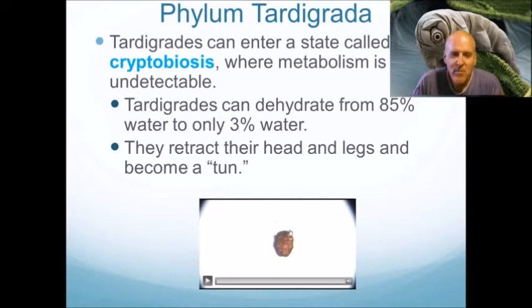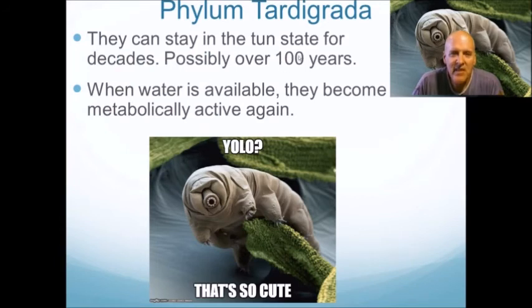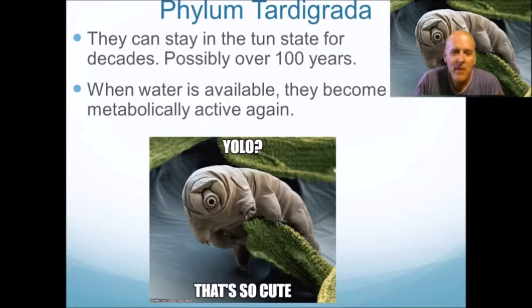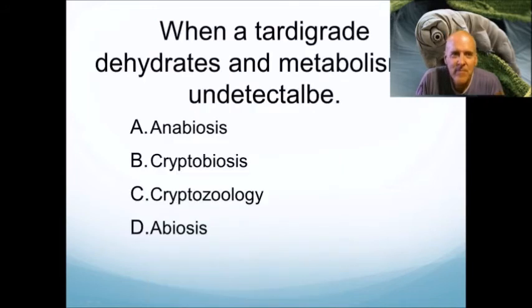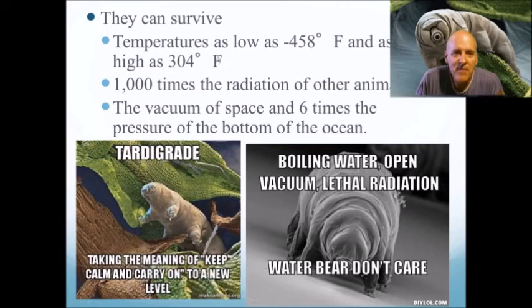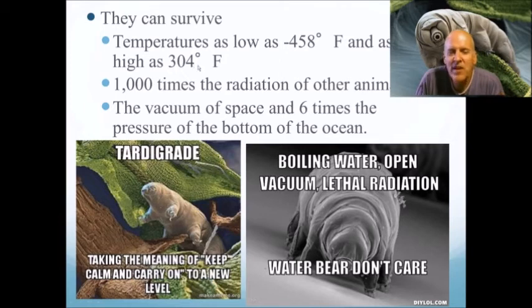While in cryptobiosis, tardigrades can stay in that state for decades, possibly over a hundred years. They can survive temperatures as low as minus 458°F and as high as 304°F — nearly a hundred degrees above the boiling point of water. They can withstand a thousand times the radiation of other animals, are the only animal known to survive the vacuum of space, and can withstand six times the pressure at the bottom of the ocean.